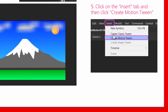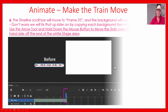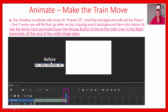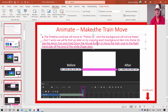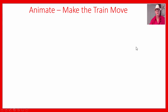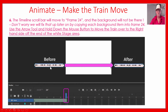Click on the Insert tab and choose Create Motion Tween. What should happen is that on your train layer you'll have a dot where the train is in the before position, and your blue scroller bar should move up to frame 24. Animate should have done that automatically. If your blue scroll bar is still back at the start for some reason, just push down and drag it to make sure it's right at the end at frame 24.